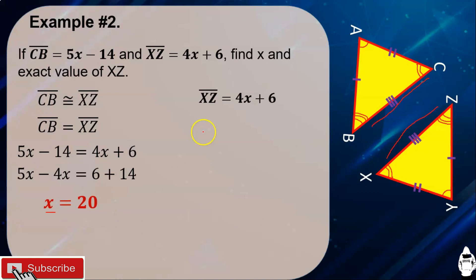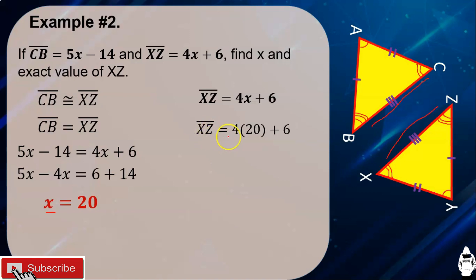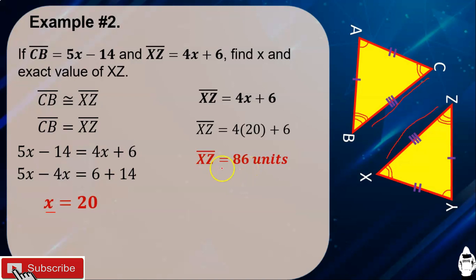We are now going to find the value of XZ. Since XZ equals 4X plus 6 and X is 20, substitute: segment XZ equals 4 times 20 plus 6. Simplifying: 4 times 20 is 80, plus 6 is 86. So segment XZ equals 86 units.